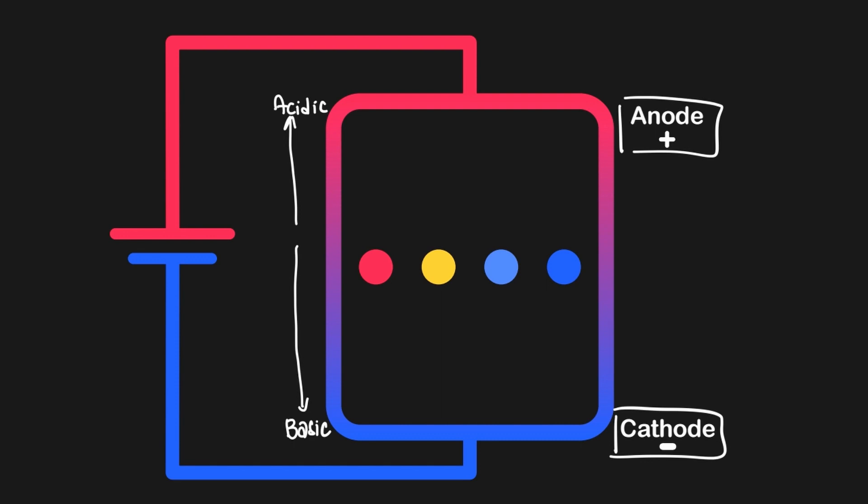Regardless of whether a cell is electrolytic or galvanic, the anode will always attract anions and the cathode will always attract cations, hence their names. In this case, the anode is positioned at the acidic side, which you can remember because they both start with A, acid anode, while the cathode is positioned at the basic side.